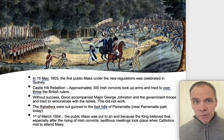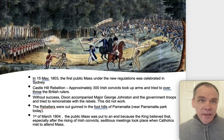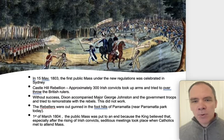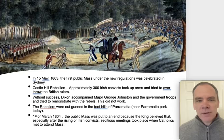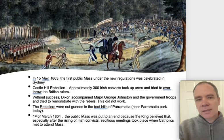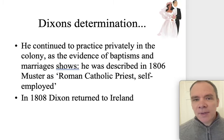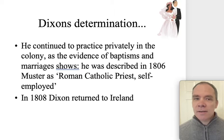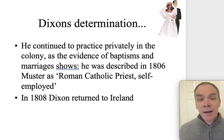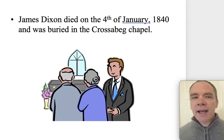The rebels were outgunned in the foothills near Parramatta — the cannon is still there today. On the 1st of March 1804, the public Mass was brought to an end because the King believed that seditious meetings were taking place among Catholics as they gathered during Mass, especially following the Irish convict rising. Dixon continued to practice privately in the colony, as evidenced by baptisms and marriages. He was described in the 1806 muster as a Roman Catholic priest, self-employed. In 1808, Dixon returned to Ireland, and he died on the 4th of January 1840, buried at Crossenburg Chapel.